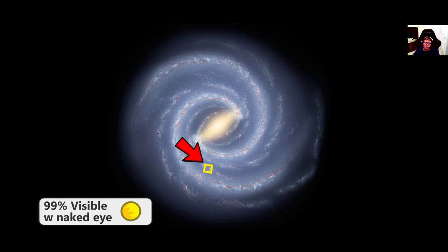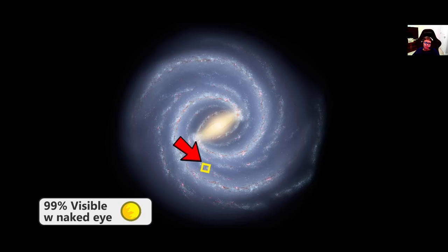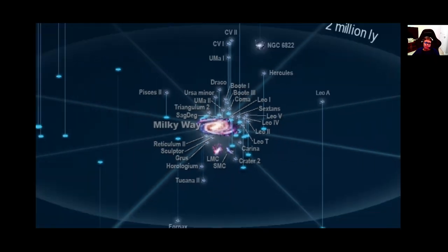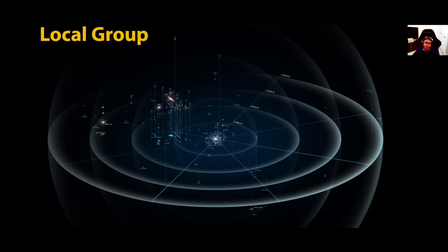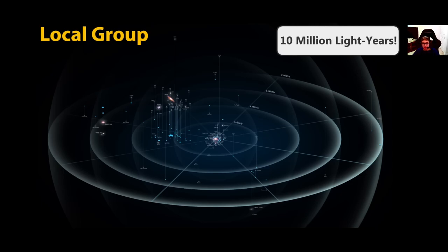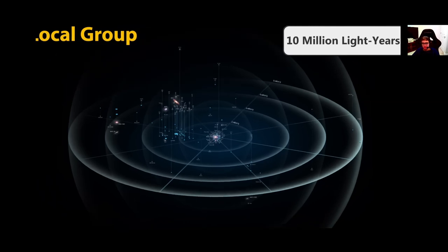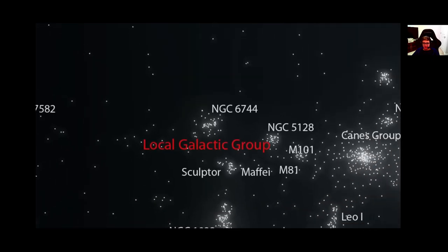But even this massive galaxy is nothing compared to the rest of what's out there. Zooming out even further and we arrive at the local group of galaxies. A collection of 54 different galaxies that is about 10 million light years across. But zooming out even further and we can see the Virgo supercluster.